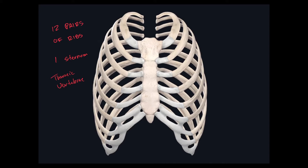The first seven pairs of ribs, starting from superior to inferior, are called true ribs. The reason why they're called true ribs is because they have costal cartilage that unites with the sternum directly. As you can see here, this grayish blue is the costal cartilage I was referring to. The first seven pairs have costal cartilage that unites directly to the sternum, so they are true ribs.